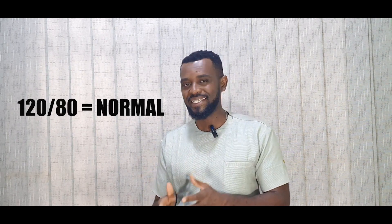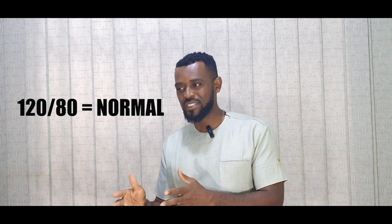Now, depending on which resource you are reading or which resource your doctor subscribes to, blood pressure readings are categorized into either three or four. Generally, we all accept that blood pressure up to 120 over 80 is normal. So once they check your blood pressure and it's 120 over 80 or less, it's considered normal, and you can go about your normal activity. Whatever you are doing that's keeping your blood pressure normal, just continue doing it.